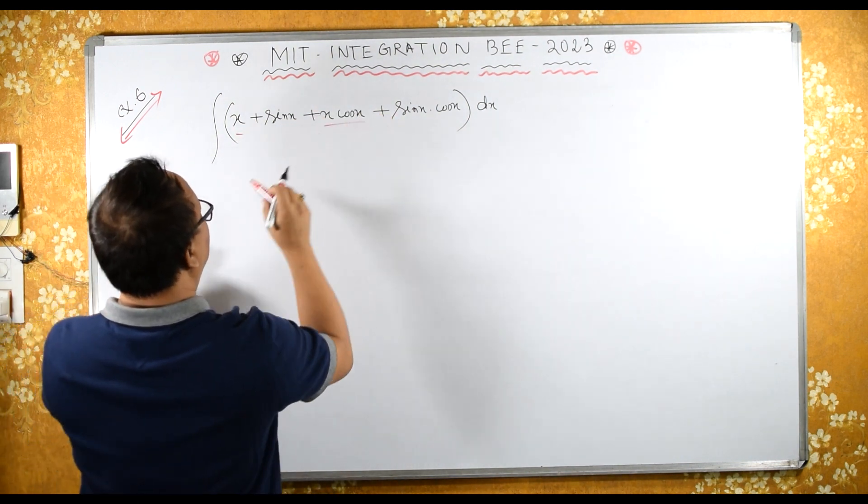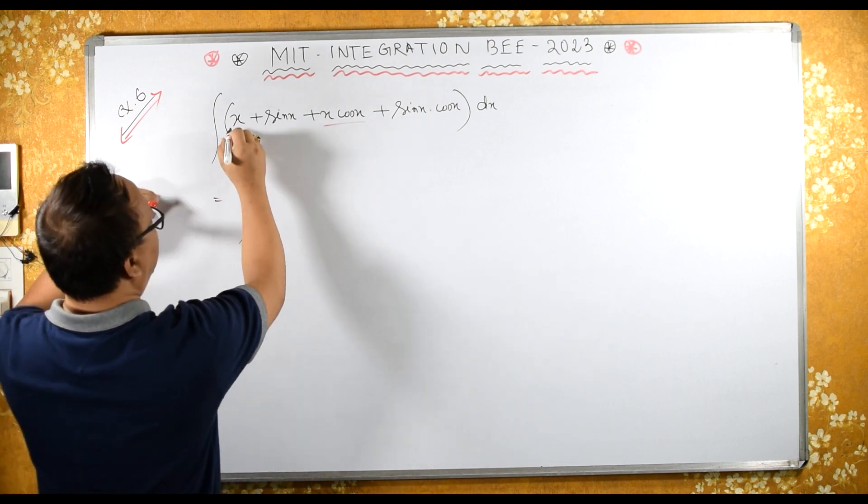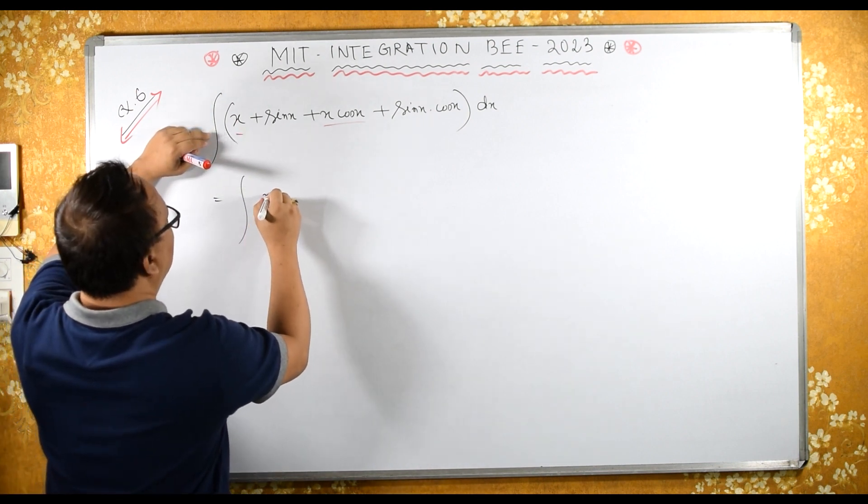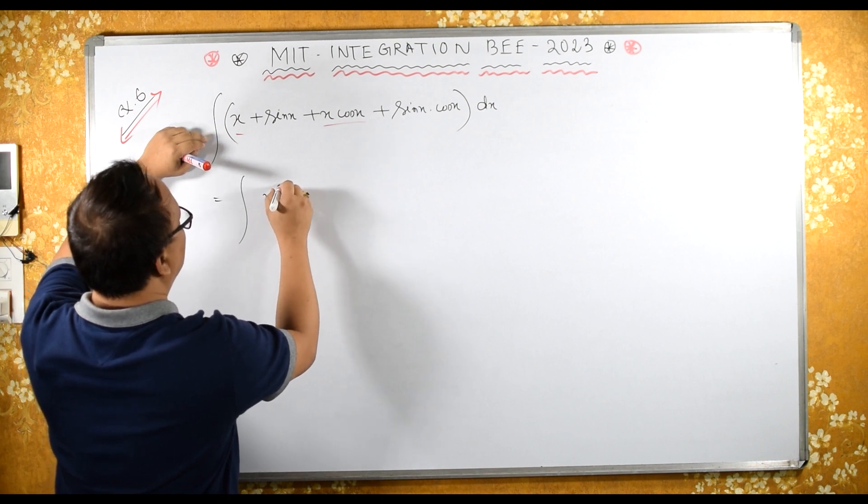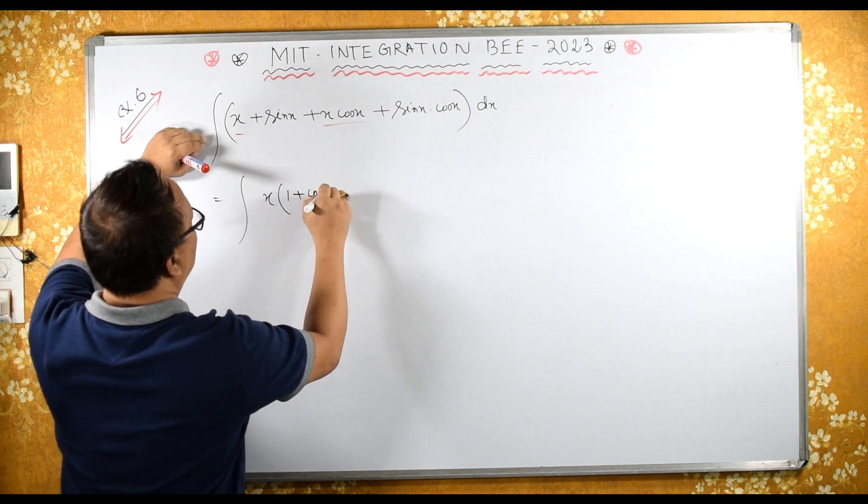Now from here I can take x common. This is integral. If I take x common here, what I have is 1 plus cos x.